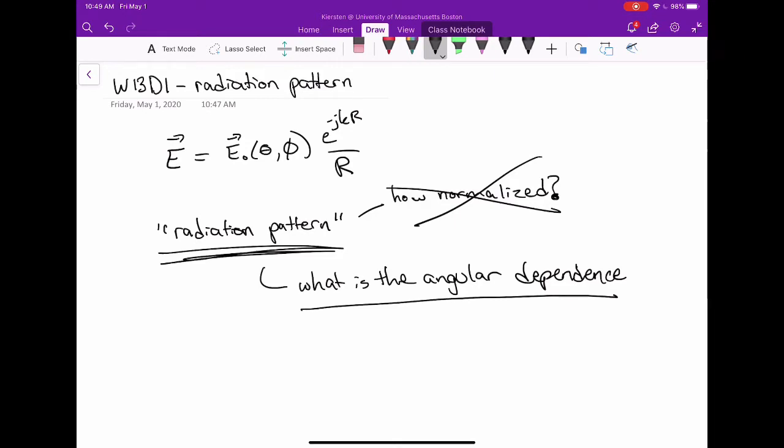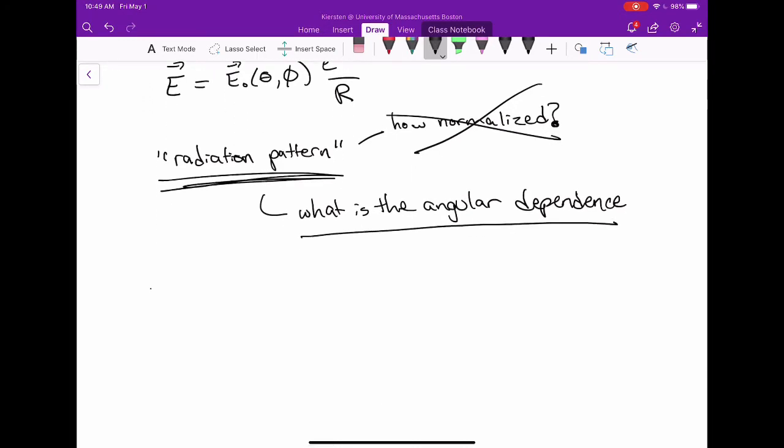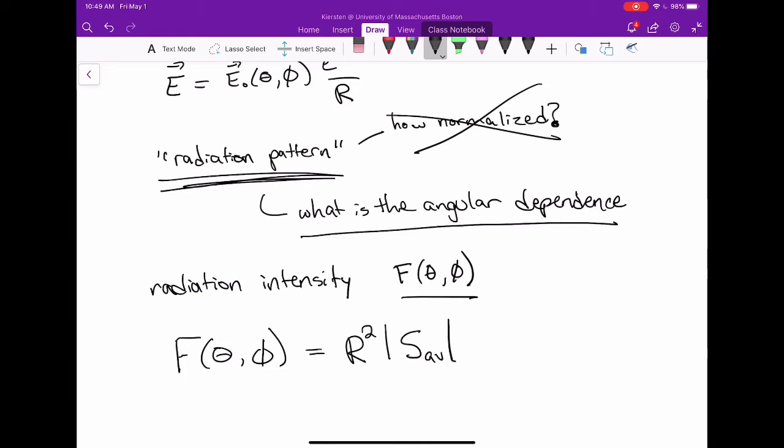There are other terms that you can use when you do want to be specific and technical. For instance, you can talk about the radiation intensity. Your book uses F for that. I've also seen capital U used, but F is fine. So if we're using F of theta and phi as the radiation intensity, it is defined as R squared times the magnitude of the time average pointing vector, which you remember, this is the radiation power density.